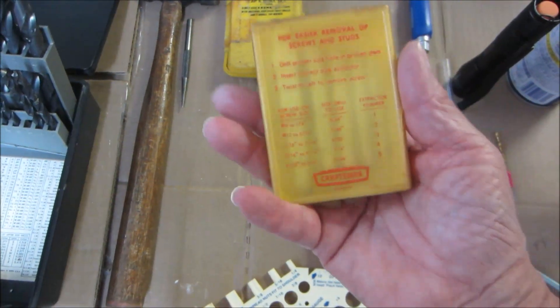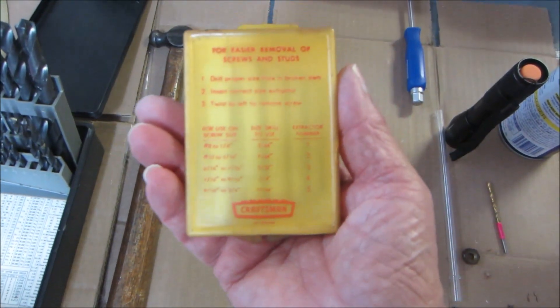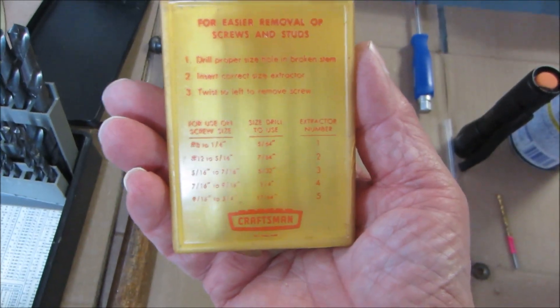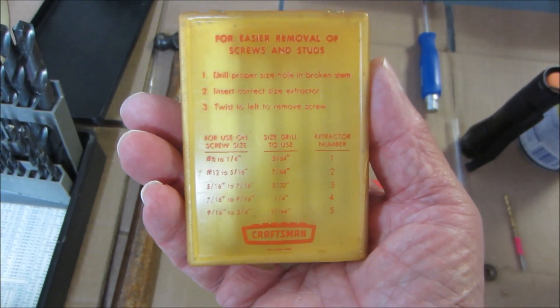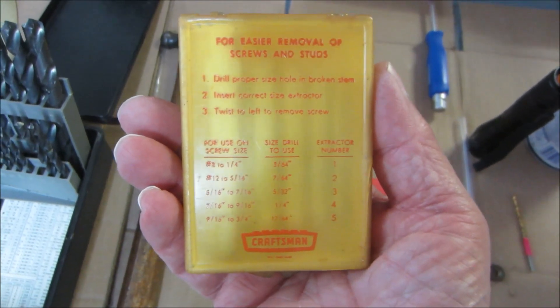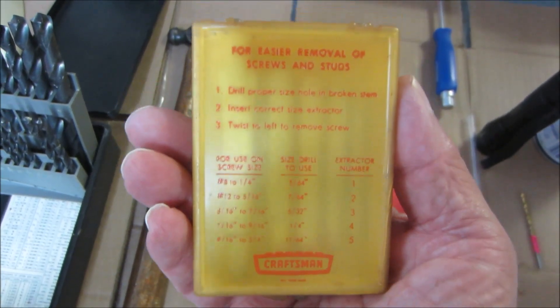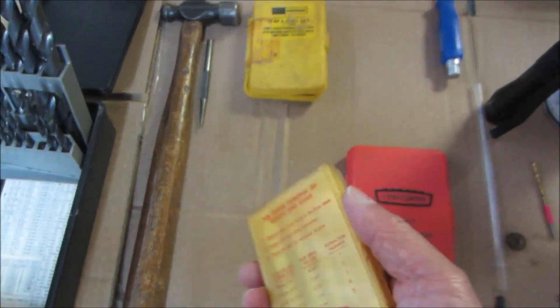Now on the back there's a little chart that tells you what size drill bit to use for what thickness bolt you're trying to remove. Well I've never been successful following these guidelines. So here's what I did today.